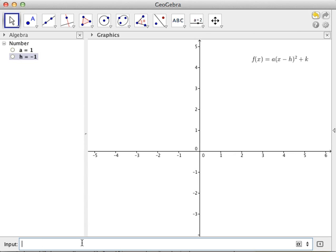To graph the function, we just have to type f(x) equals a times quantity (x minus h), and then the exponent caret 2 squared, and then plus k. So there's our graph.